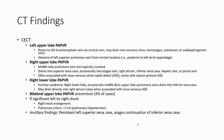On contrast-enhanced CT, the left upper lobe pulmonary vein drains to the left brachiocephalic vein via a vertical vein. It may drain into the coronary sinus, azygos vein, subclavian, or sub-diaphragmatic vein.